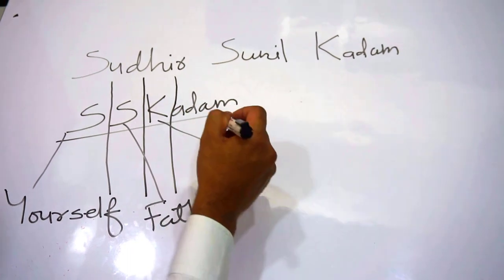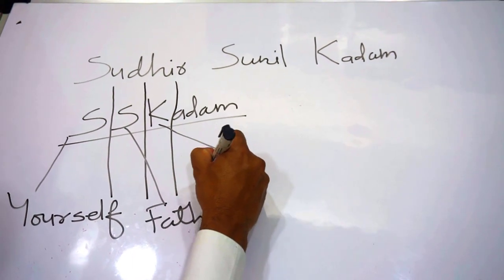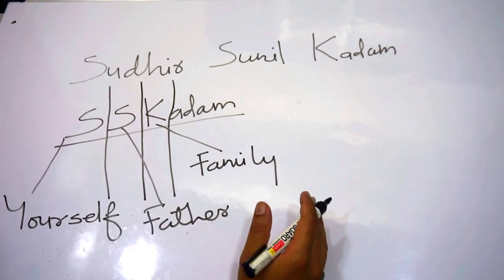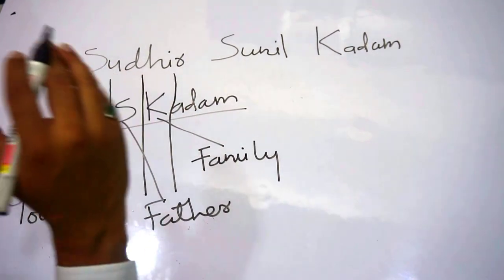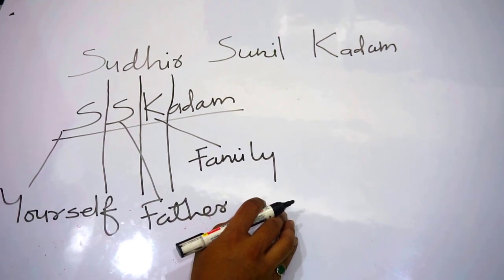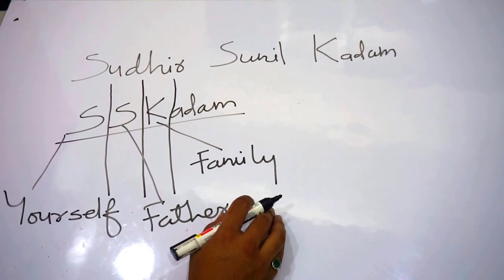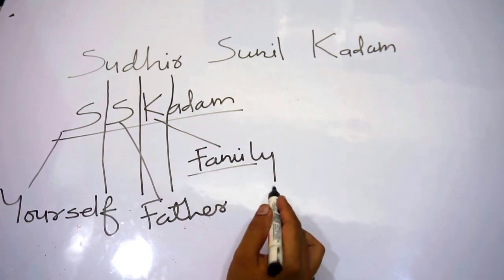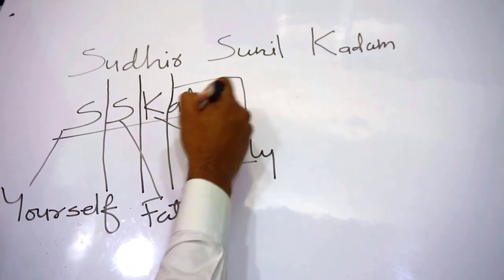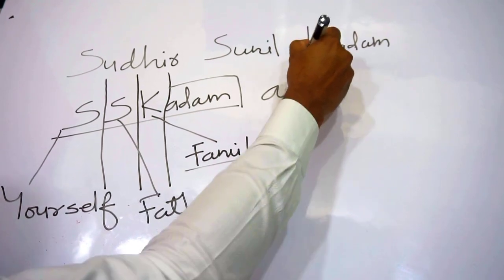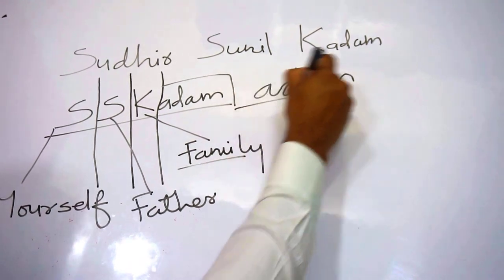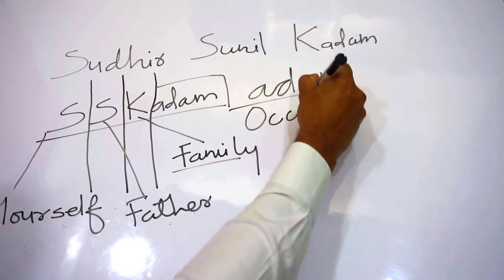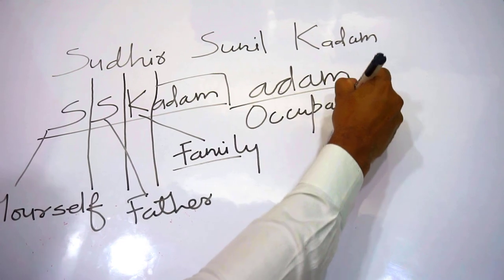The third part is the family name — the name which is carried forward. The first initial of your signature's surname indicates the way you treat family, how you pursue family, or how you behave emotionally, because family is a very emotional matter. The remaining part of the signature shows the way you occupy your time — not profession, but occupation — how you spend your time.